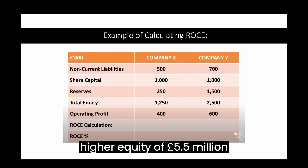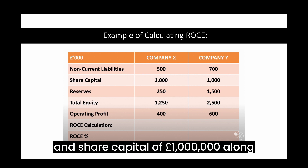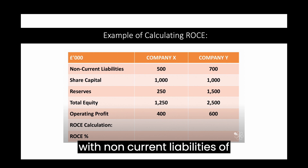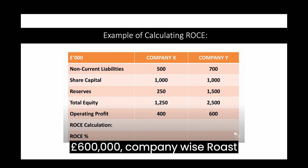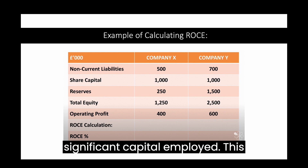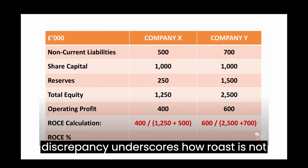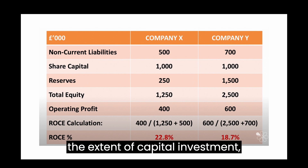Company Y possesses a higher equity of £5.5 million, consisting of reserves worth £4.5 million and share capital of £1 million, along with non-current liabilities of £700,000. Despite its larger operating profit of £600,000, Company Y's ROCE stands at 18.7%, reflecting the significant capital employed. This discrepancy underscores how ROCE is not solely influenced by profit, but also by the extent of capital investment, portraying a crucial aspect of financial performance assessment.